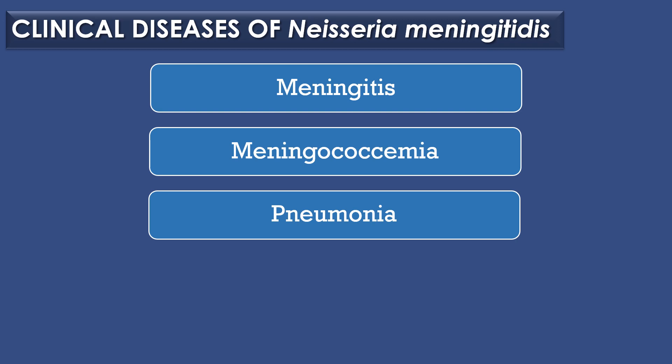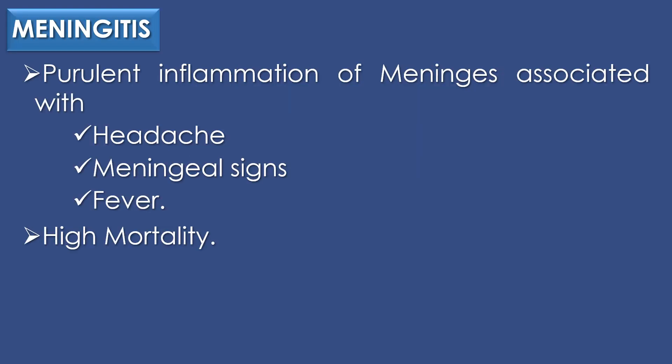Clinical diseases of Neisseria meningitidis: Neisseria meningitidis results in 3 clinical diseases — meningitis, meningococcemia, and pneumonia. The first clinical disease is meningitis. Meningitis is a purulent inflammation of the meninges, which is associated with headache, meningeal signs, and fever. A high mortality rate is observed unless properly treated with effective antibiotics.